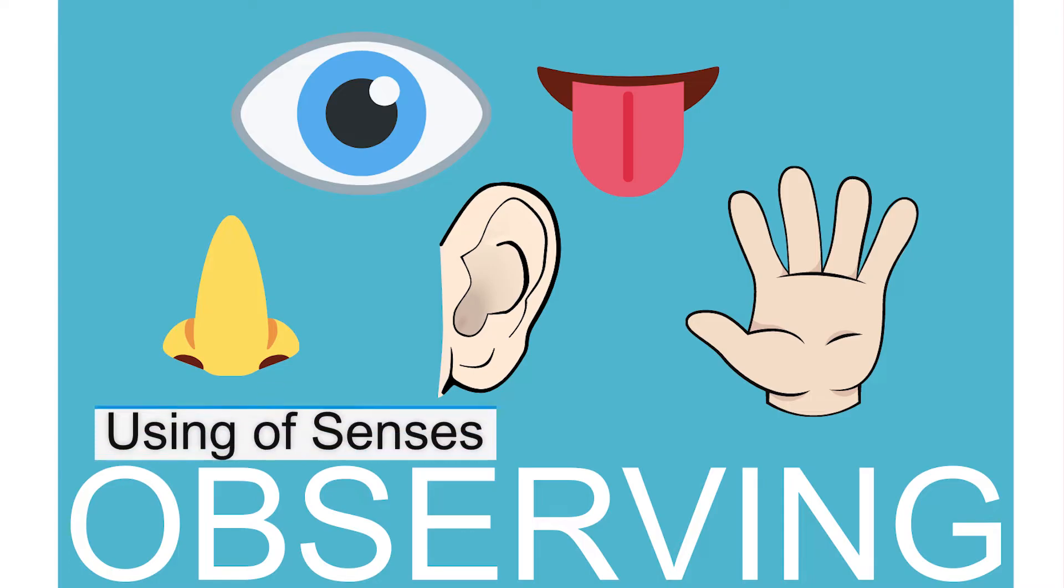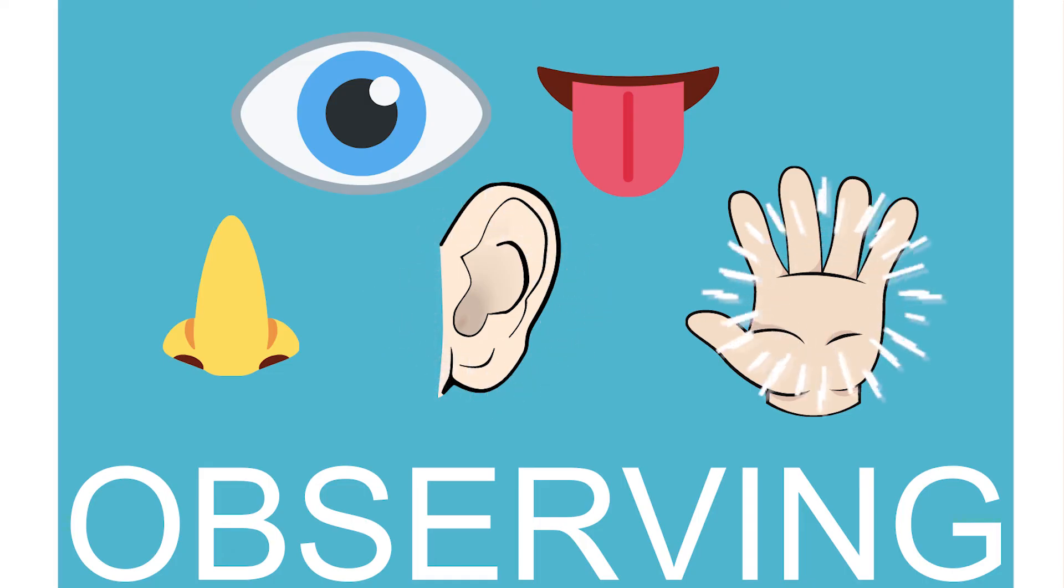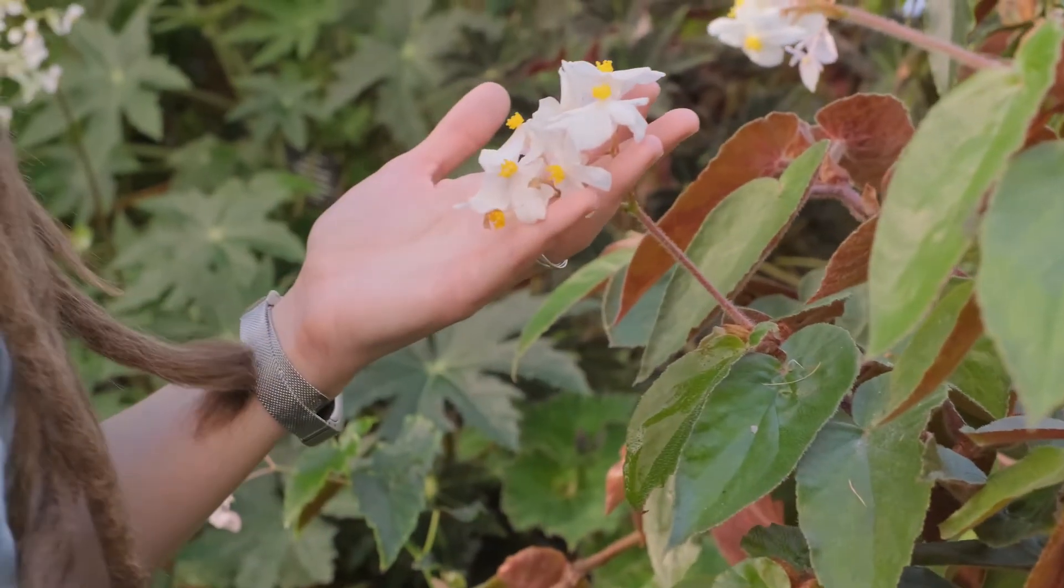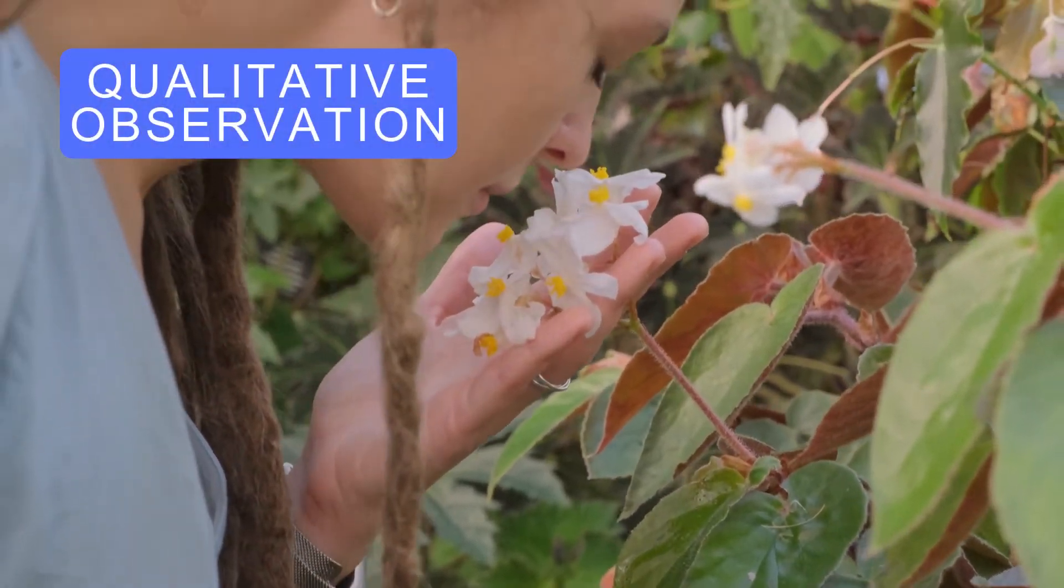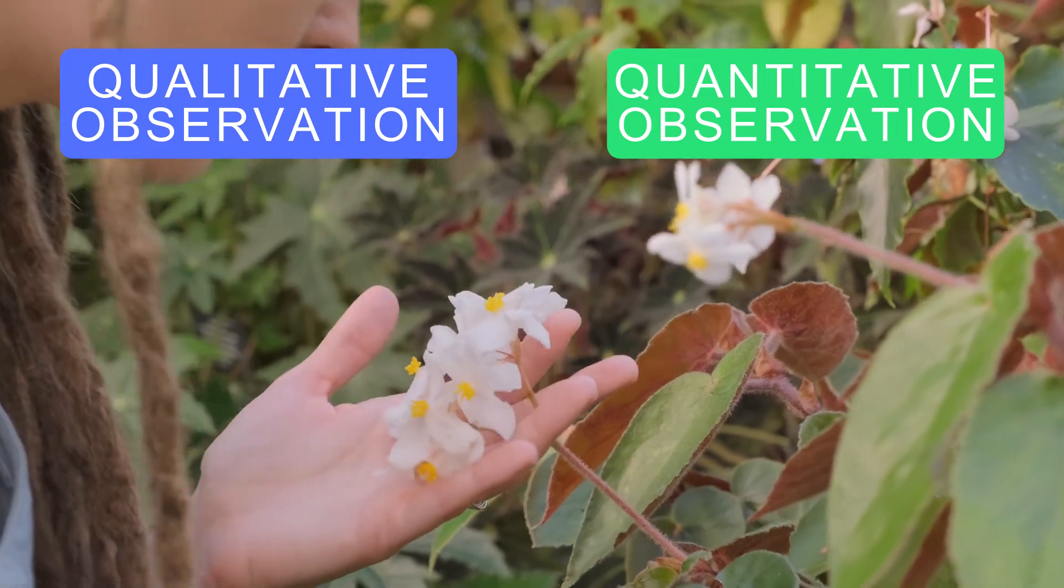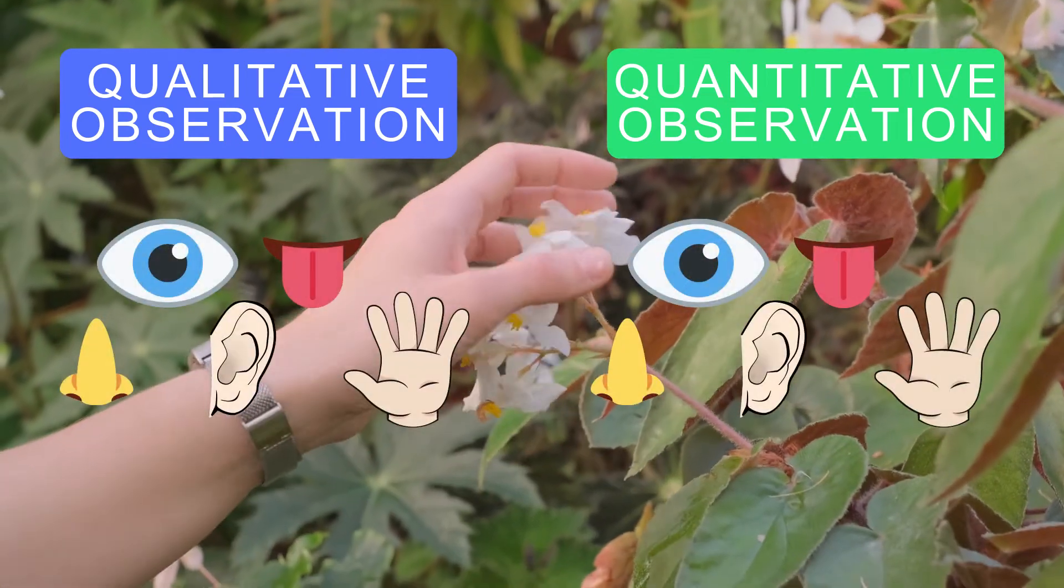Observing is a skill where we use our senses: sight, hearing, touch, taste, and smell. Observations can either be classified as qualitative or quantitative, both of which use our senses.